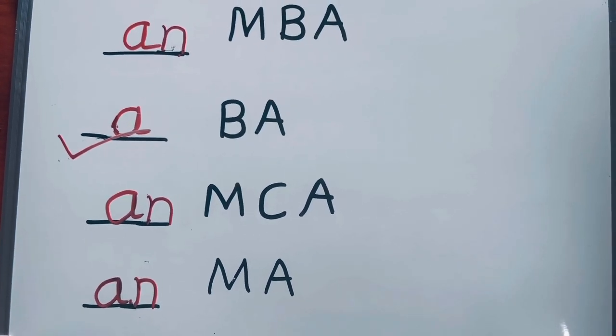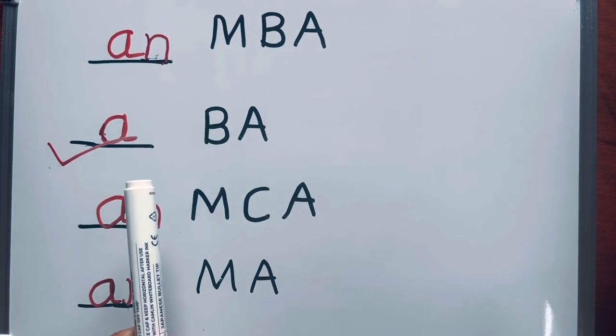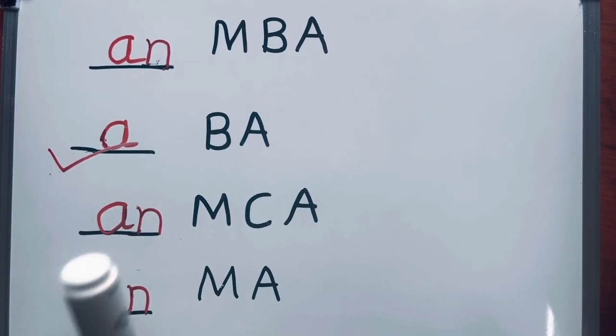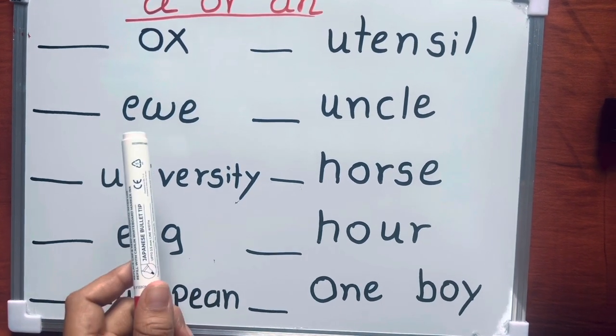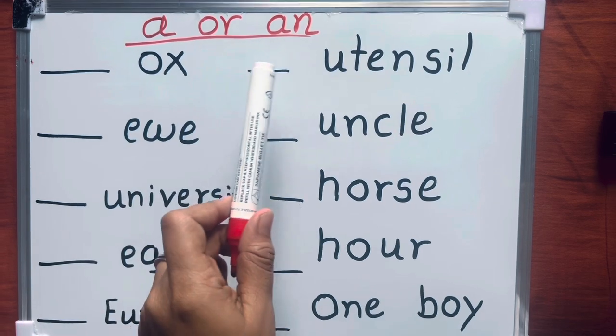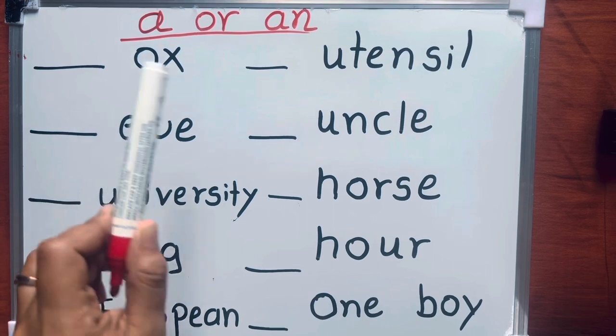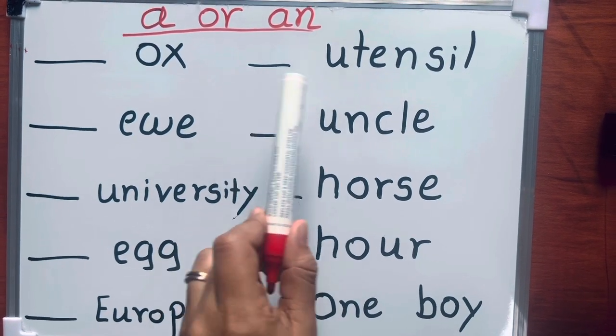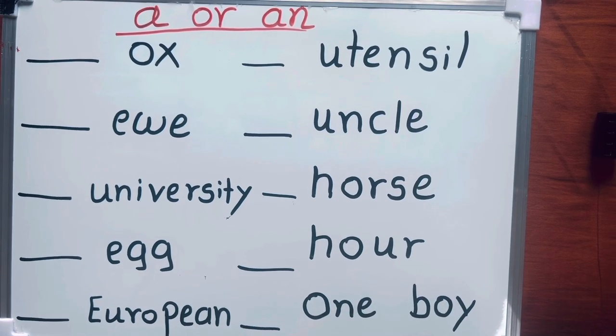Hope this concept is clear for you. Remember, this rule applies to the name of the degree only. Now, your turn to write down A or AN articles: a ox or an ox, a utensil or an utensil. Share your comments.